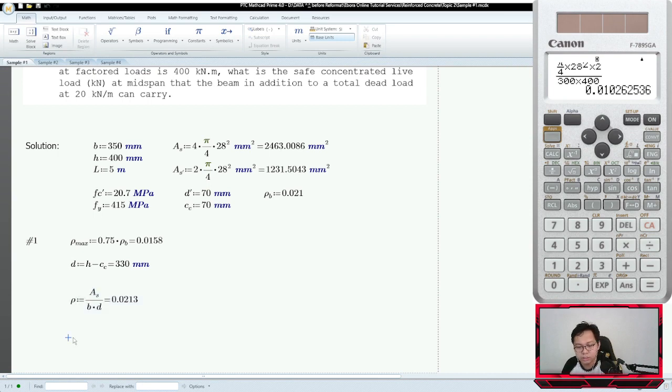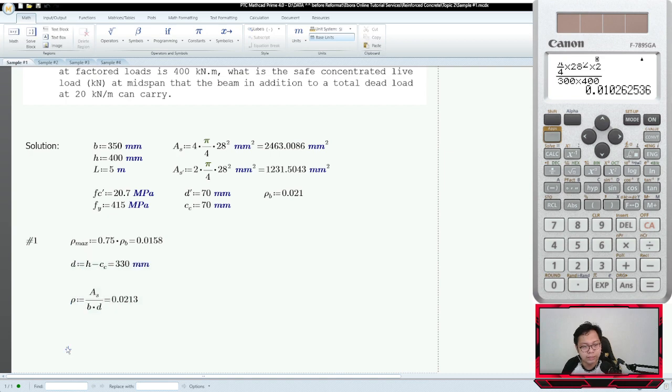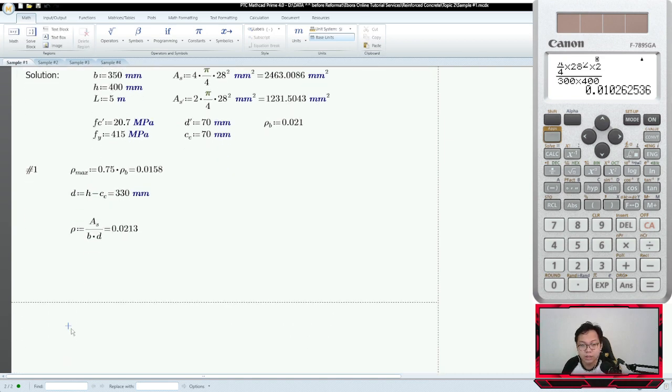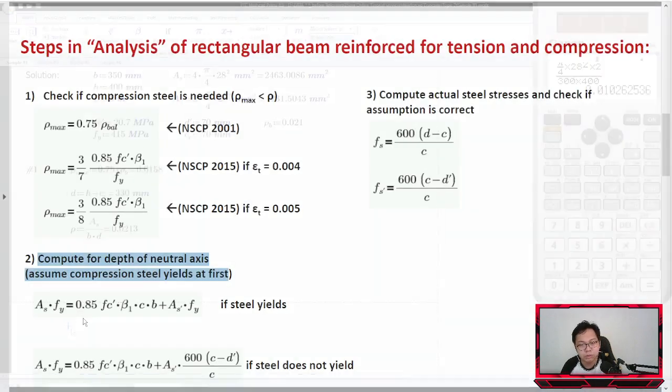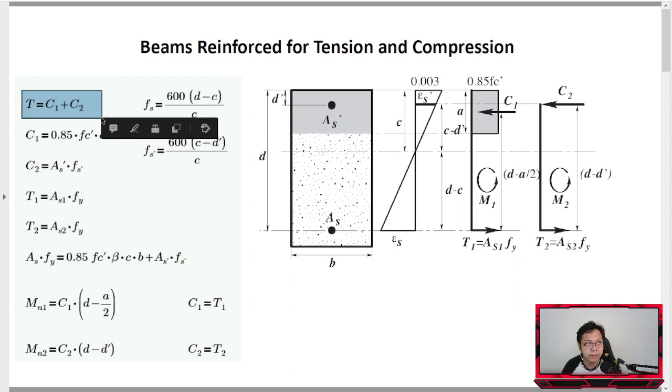To compute for the rectangular stress block, you need to assume that the tension steel yields. Actually, the problem already stated this, so we don't need to assume - go directly. If ever you forget the equation ASFY, just remember the concept for doubly reinforced: Total T equals C1 plus C2.